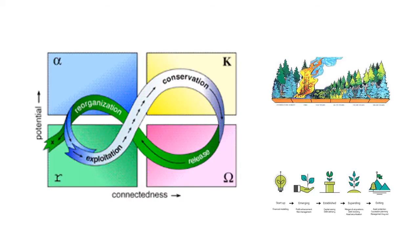The adaptive cycle consists of four phases: exploitation, conservation, release, and reorganization. It describes how an ecosystem organises itself and how it responds to a changing world. It can also be used for any complex adaptive system.